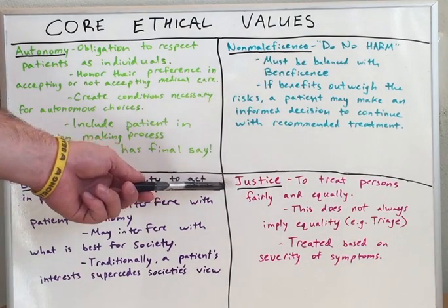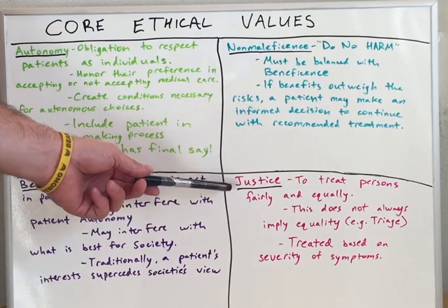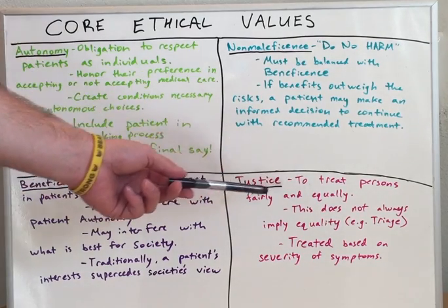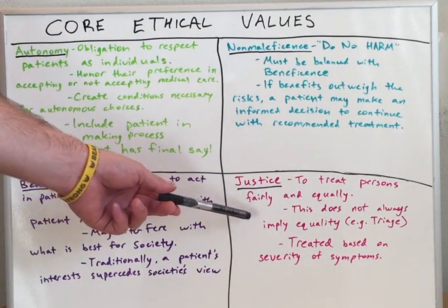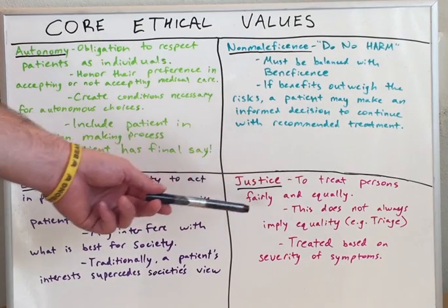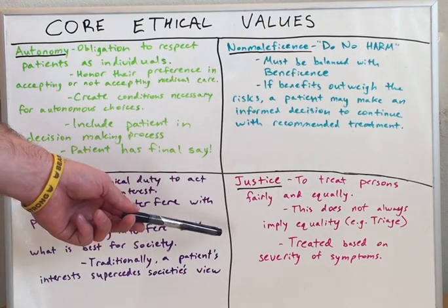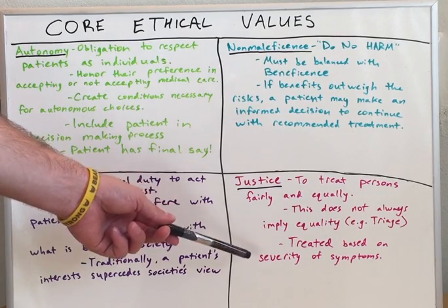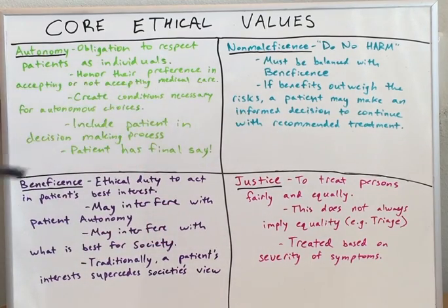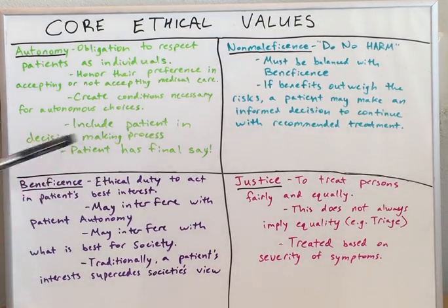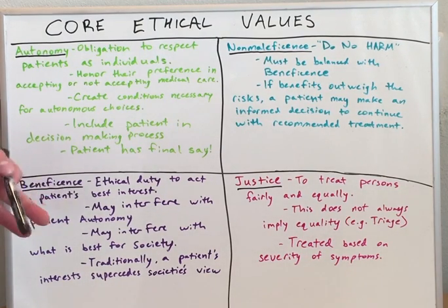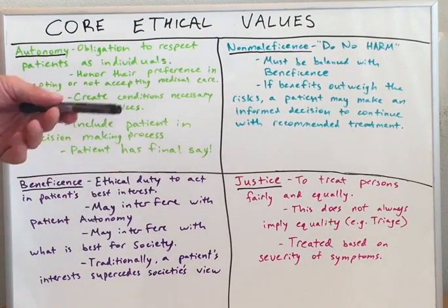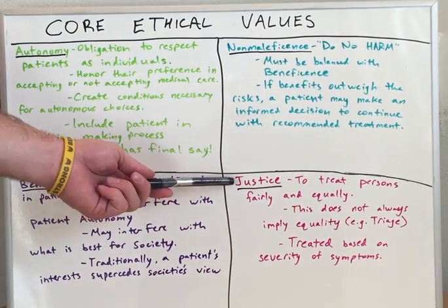Finally, justice — which is to treat persons fairly and equally. This does not always imply equality. An example is a triage system where patients are treated based on the severity of symptoms, as seen in the emergency department when someone who has cut their finger is seen after someone who is unable to breathe well. The person with more severe symptoms is treated first. This is an example of justice.